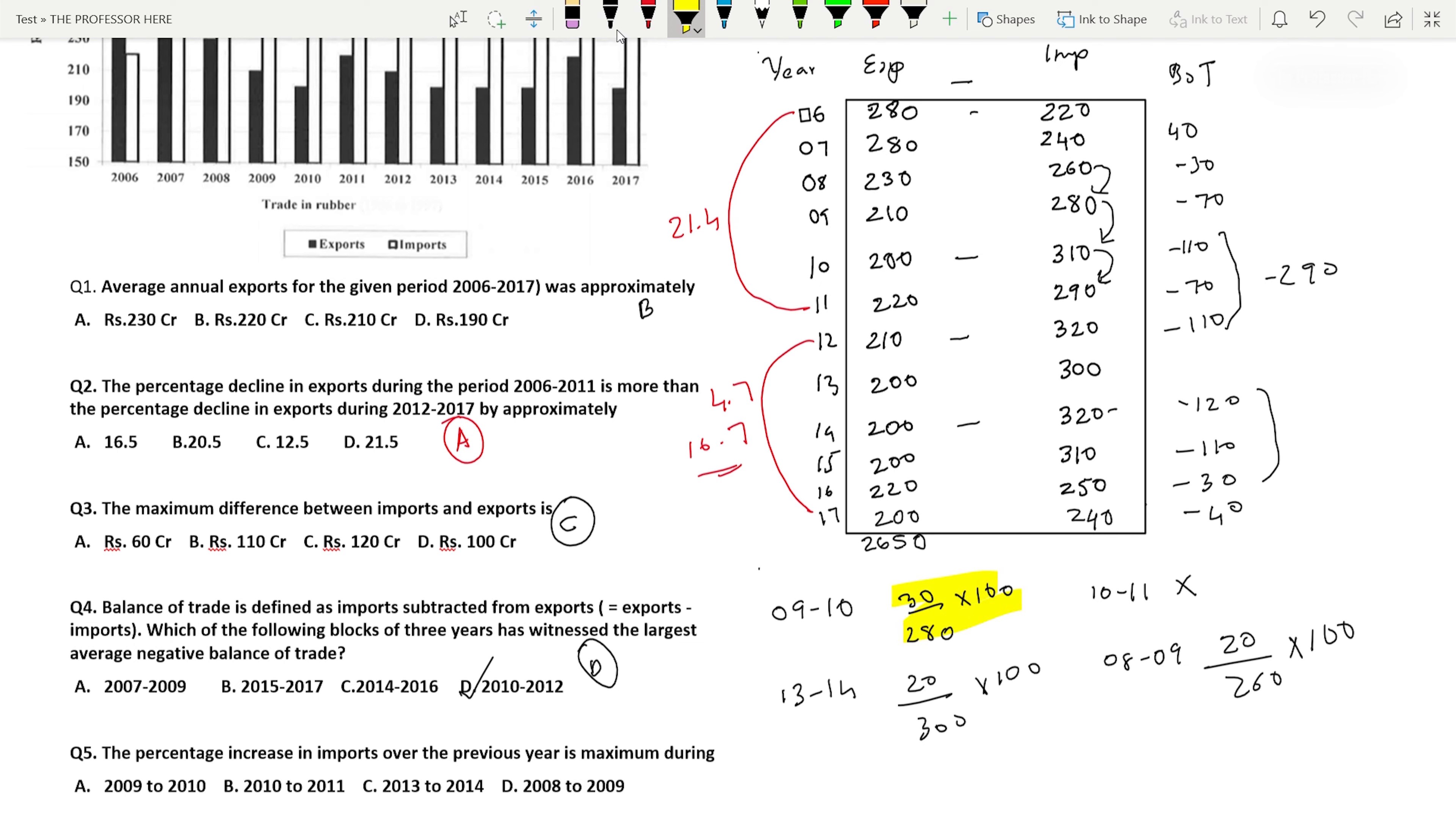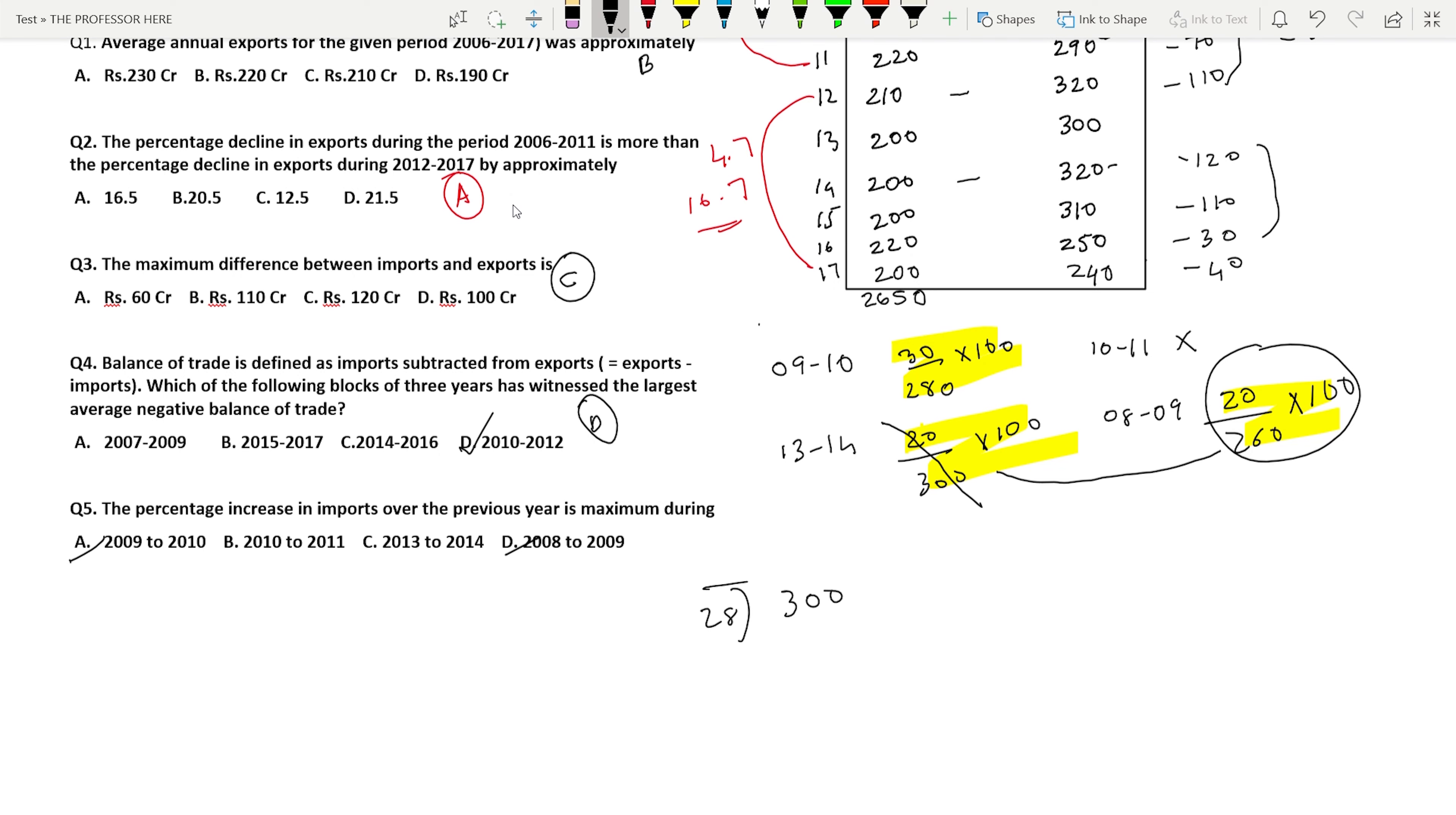We have four values here. When you compare 20 by 300 and 20 by 260, the denominator is less in 260. As the denominator reduces, the value of the fraction increases. Since the value of 20 by 300 is less than 20 by 260, we avoid option 2013 to 2014. Now it's between option A and option D. Option A is 3000 divided by 280, and option D is 2000 divided by 260. 28 times 10 is 280, so this value is greater than 10. And 26 times 7 is less than 200, so this value is around 7 plus. Option A, 2009 to 2010, is the answer.